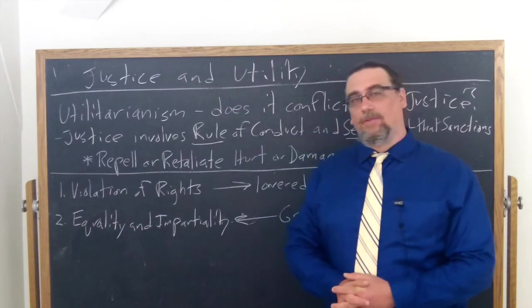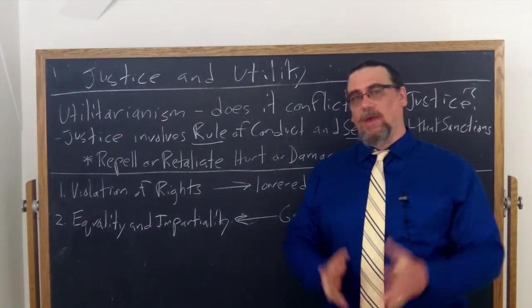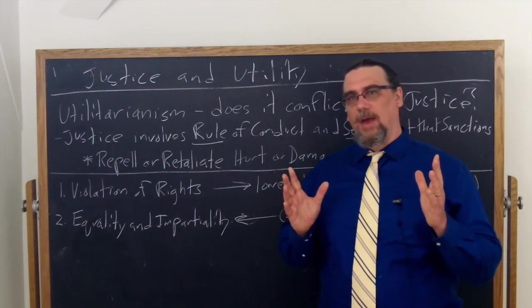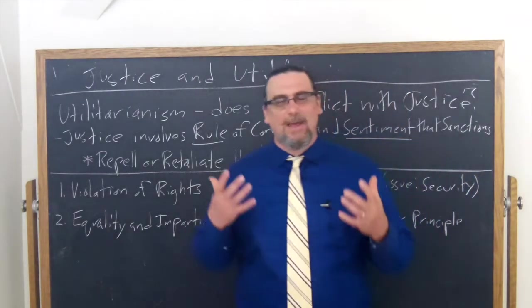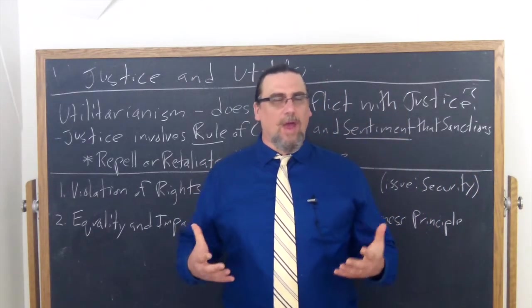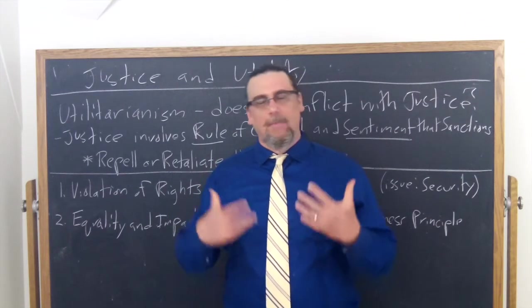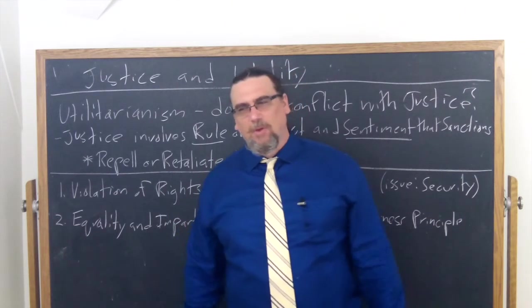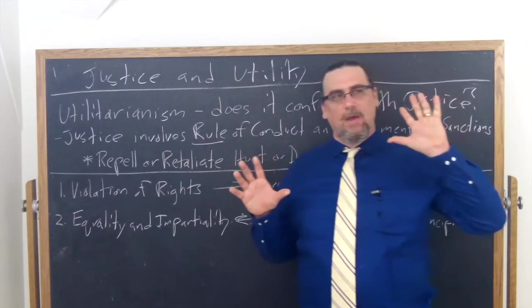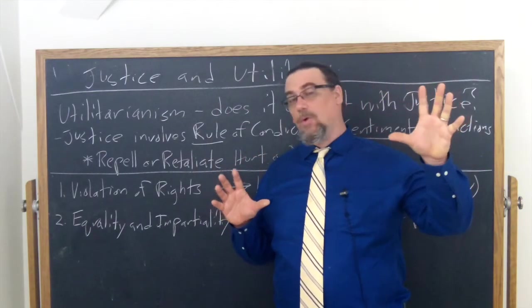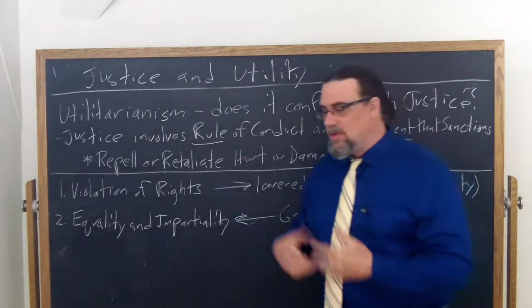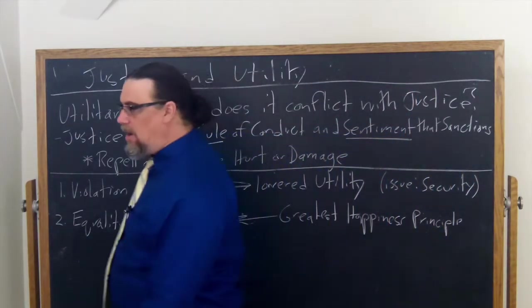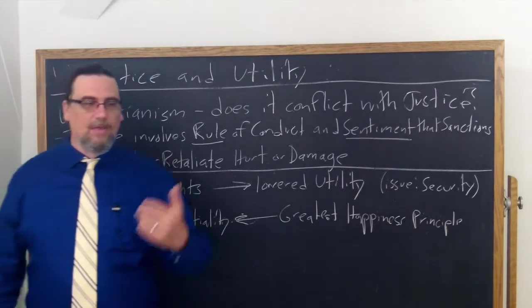One of the criticisms that gets made against utilitarianism as a moral and political theory is that in some respect it's unjust. It goes against our conceptions, however we happen to have arrived at them, of justice. So there would be a disjunction between, as Mill says, the just or the moral and the expedient and the useful.